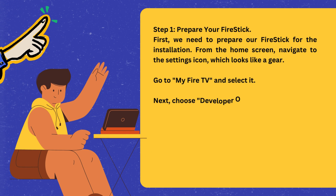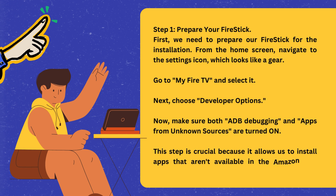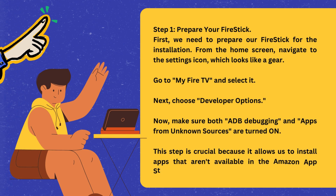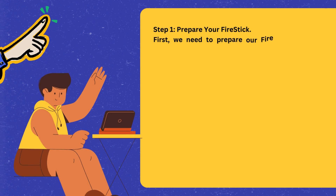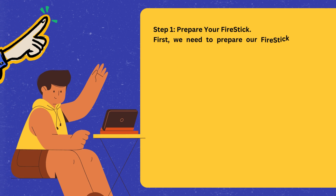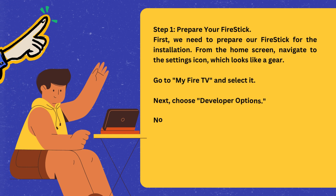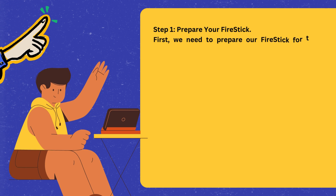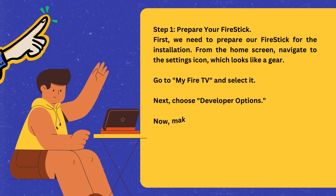Step 1: Prepare your Fire Stick. First, we need to prepare our Fire Stick for the installation. From the home screen, navigate to the settings icon, which looks like a gear. Go to My Fire TV and select it. Next, choose Developer Options. Now, make sure both ADB debugging and apps from unknown sources are turned on. This step is crucial because it allows us to install apps that aren't available in the Amazon App Store.